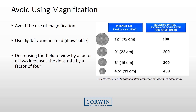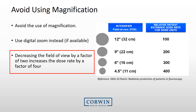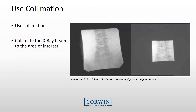When possible, avoid using magnification settings. Decreasing the field of view by a factor of 2 can increase the dose rate by a factor of 4. Collimate the x-ray beam to the area of interest to avoid exposing tissue not relevant to the procedure.